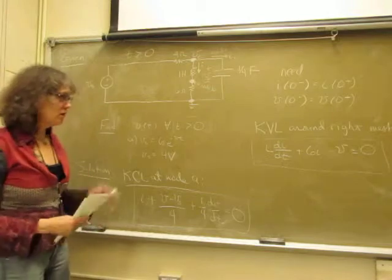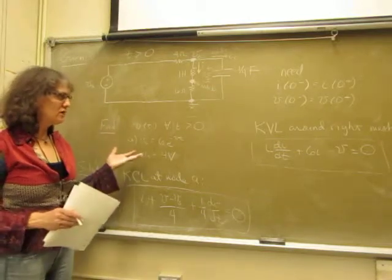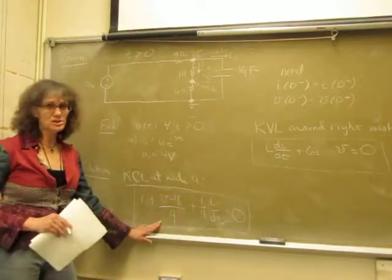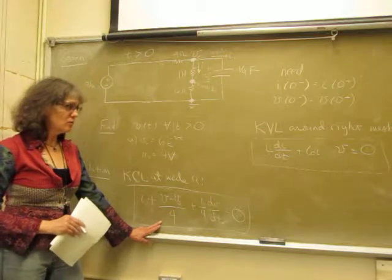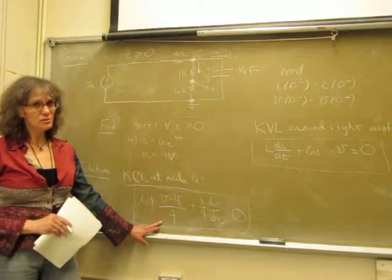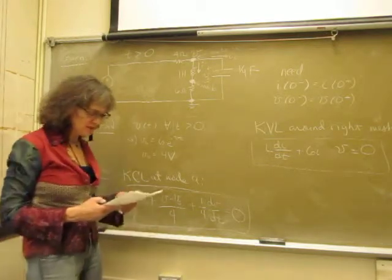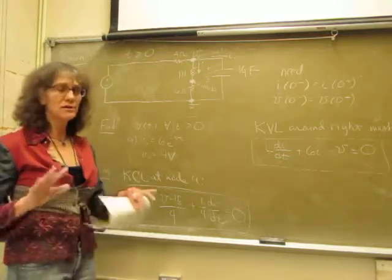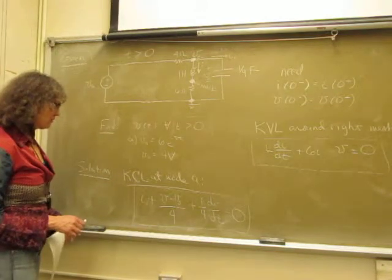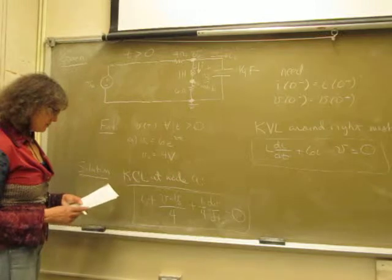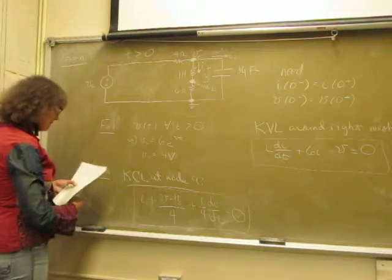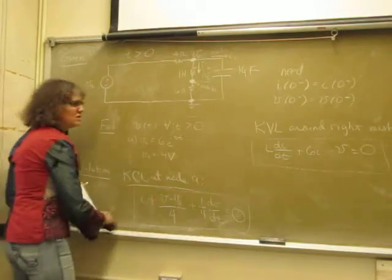I've got two equations in my two state variables, I and V. So what I want to do now is eliminate one of the variables. I've got two equations and two unknowns — these are two first-order differential equations. I'm going to eliminate one of the unknowns and end up with one equation and one unknown, but it's going to be a second-order differential equation. I'm going to use the S operator so you can see how that works.